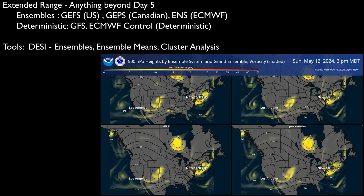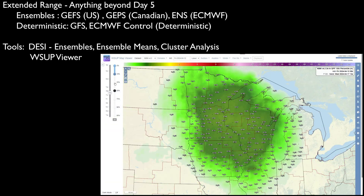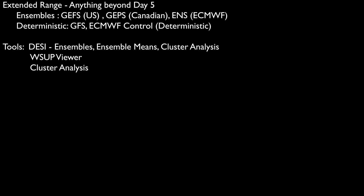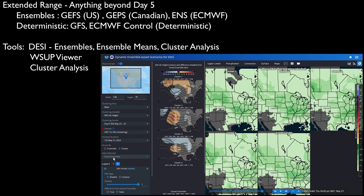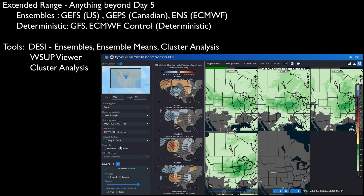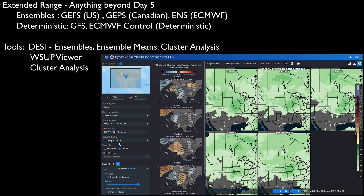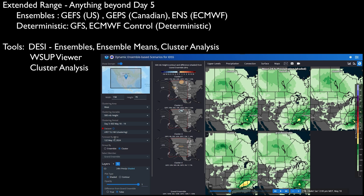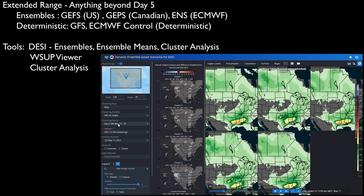Starting in the extended range, which we will define as anything beyond Day 5, you will have ensembles to look at along with a few deterministic models. Often the best approach is to use DESI to look at the grand ensemble and the NBM Westup Viewer to see how the blend is calibrated for different fields. You can begin to quantify potential scenarios using cluster analysis in the DESI tool. Cluster analysis is an algorithm that categorizes grand ensemble members into four possible scenarios based on a selected parameter. As of mid-2024, this is done using clusters of similar 500 hPa height patterns, which can often be translated into timing, location, and intensity of potential high-impact weather and mesoscale events.